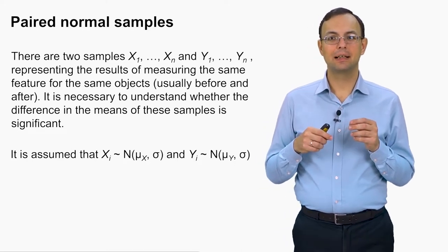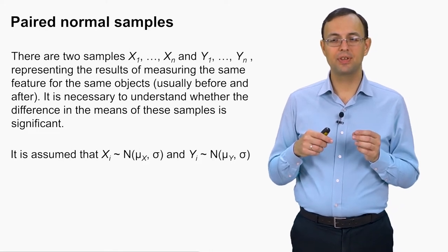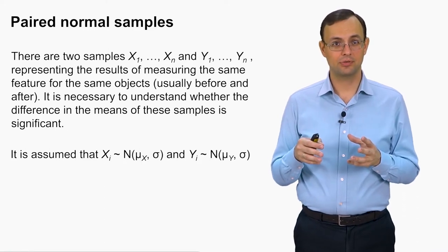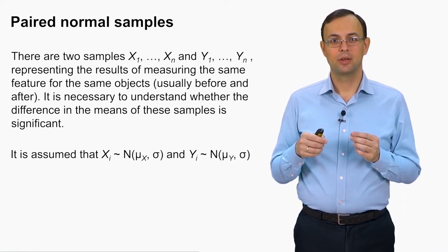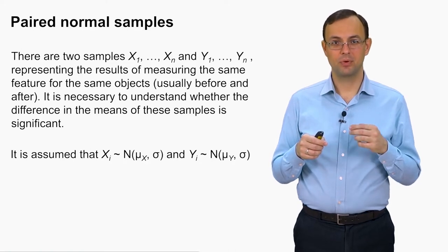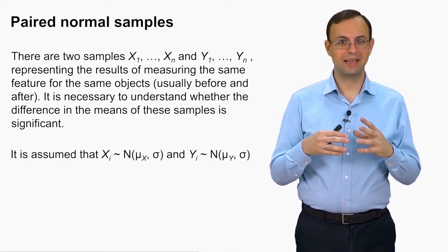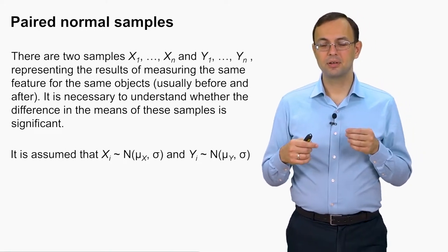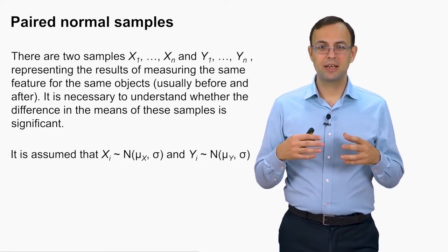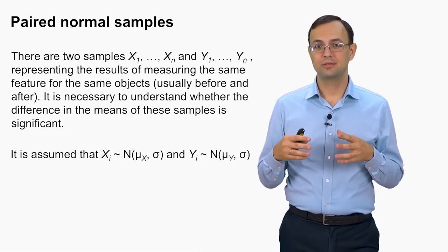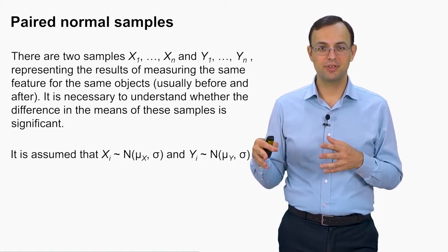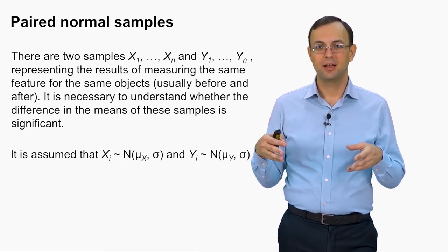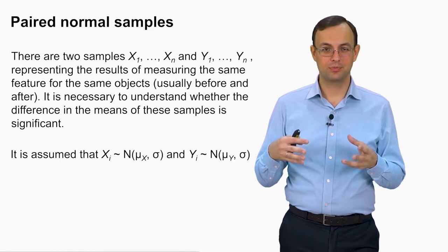We want to understand whether the difference in the means of these samples is significant or not — we are interested in the mean value of the first sample of x's and the mean value of y's. For example, if the aim of the physical training was to reduce weight, we are interested in whether the weights of these people reduced on average or not — is the average weight after the training less than it was before?